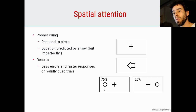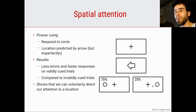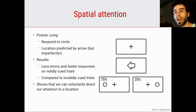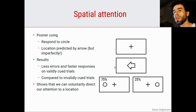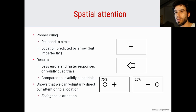What you find is that participants make fewer errors and faster responses on validly cued trials — trials in which the target appeared on the side predicted by the cue — and more errors and slower responses on the other trials. This shows, very simply, that we are able to voluntarily direct our attention to a location in space. The arrow cue requires us to interpret what the cue means. Once we've interpreted it and are aware that the cue predicts the location of the target, we voluntarily shift our attention. That is called endogenous attention, because the shift comes from within us.